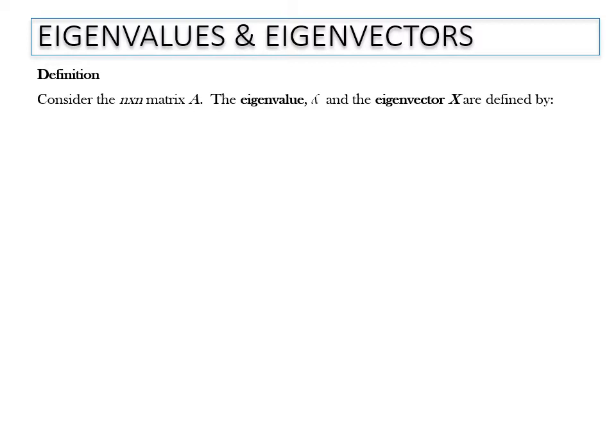The eigenvalue, denoted as lambda, and eigenvector, denoted as X, are defined by the equation AX equals lambda X.